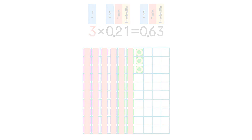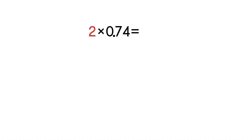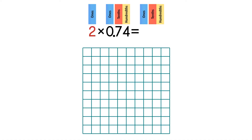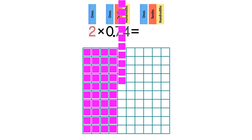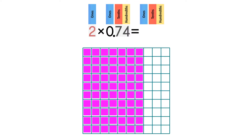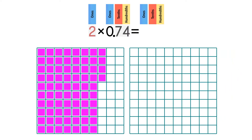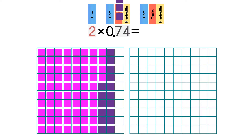Let's do another example: two times 74 hundredths. We need two sets of 74 hundredths. Shade in the first set of 74 hundredths. As you can see, we don't have enough squares to cover the second set of 74, so we're going to add another decimal model. This model represents one whole, or 100 hundredths. Now we have enough space to add another set of 74 hundredths.